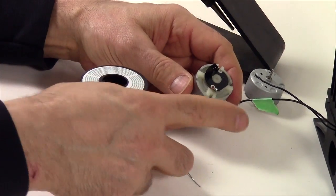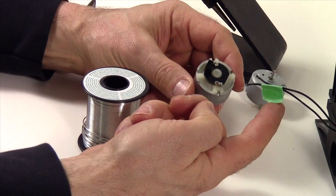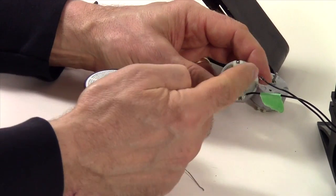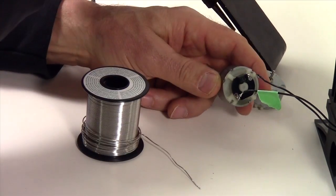So what we're going to do is solder the wire with the green tape onto that terminal. And this wire gets soldered onto that terminal.